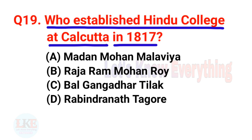Question number 19: Who established Hindu College at Calcutta in 1817? A. Madan Mohan Malaviya, B. Raja Ram Mohan Roy, C. Bal Gangadhar Tilak, D. Rabindranath Tagore. The right answer is option B, Raja Ram Mohan Roy.